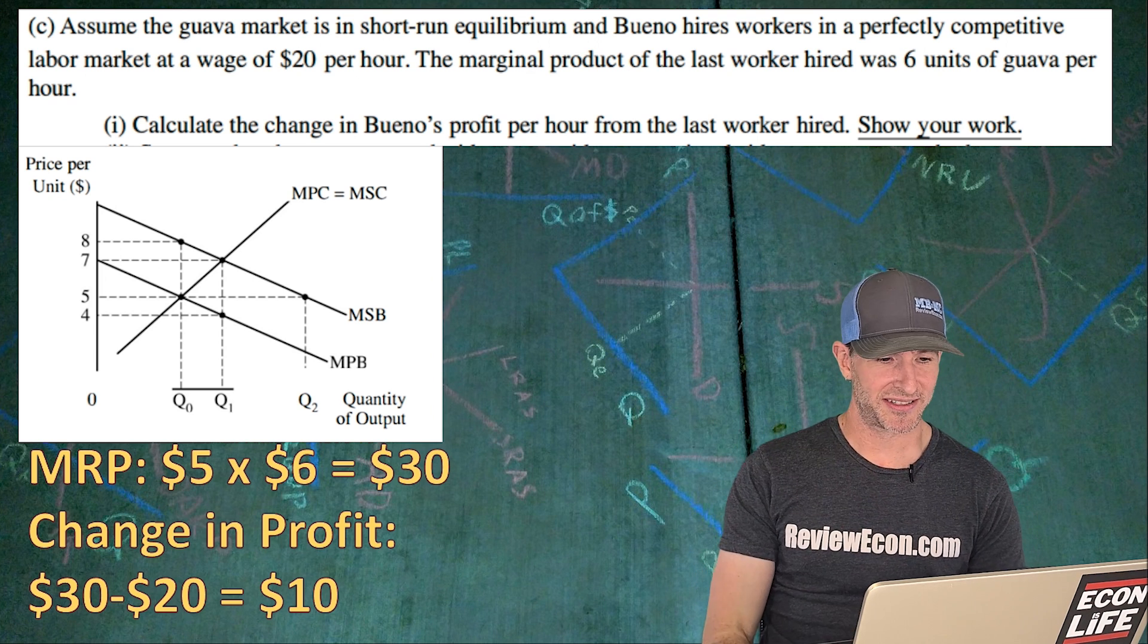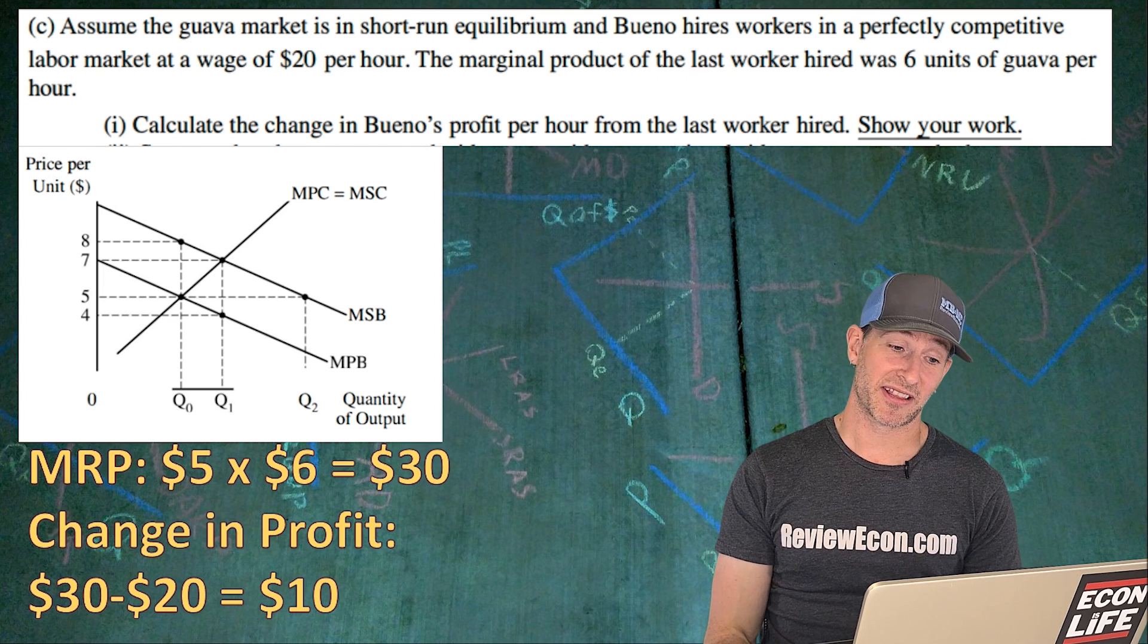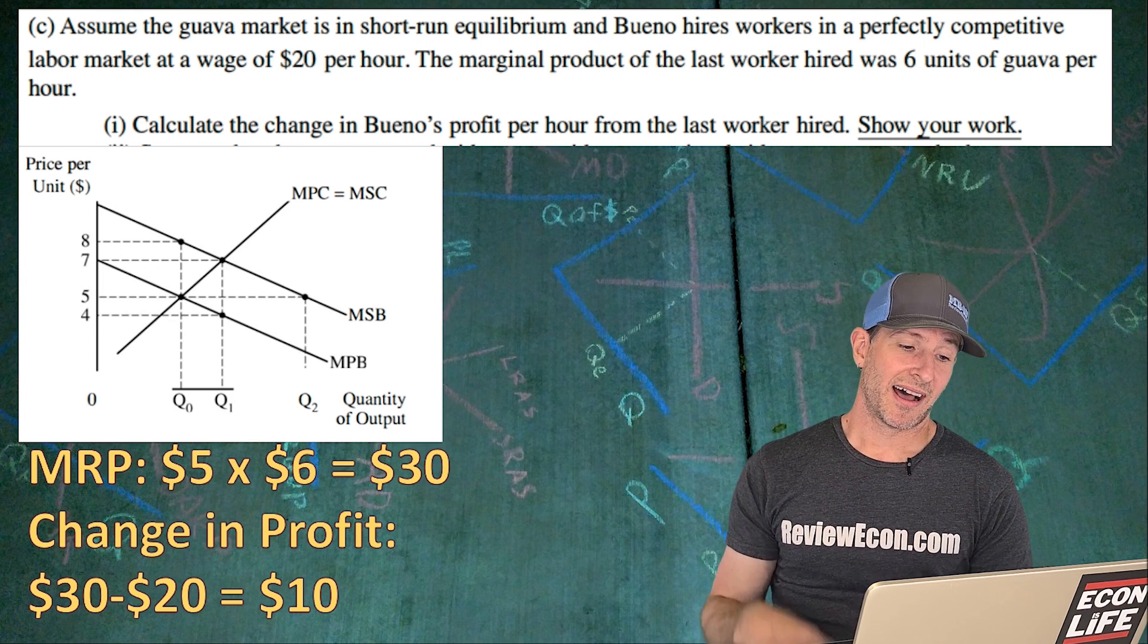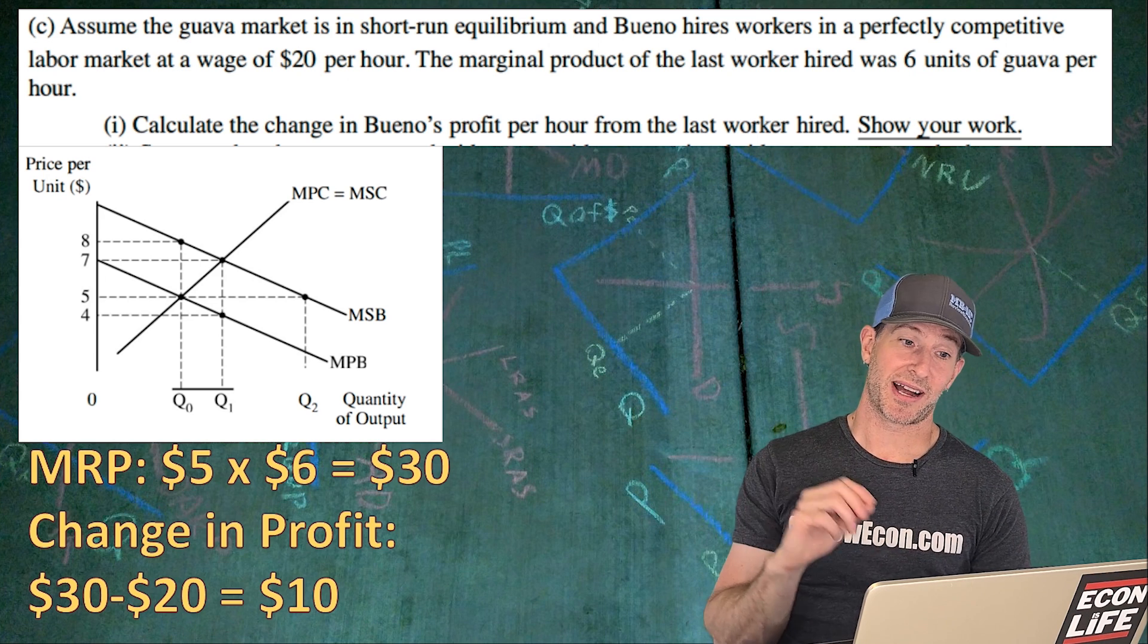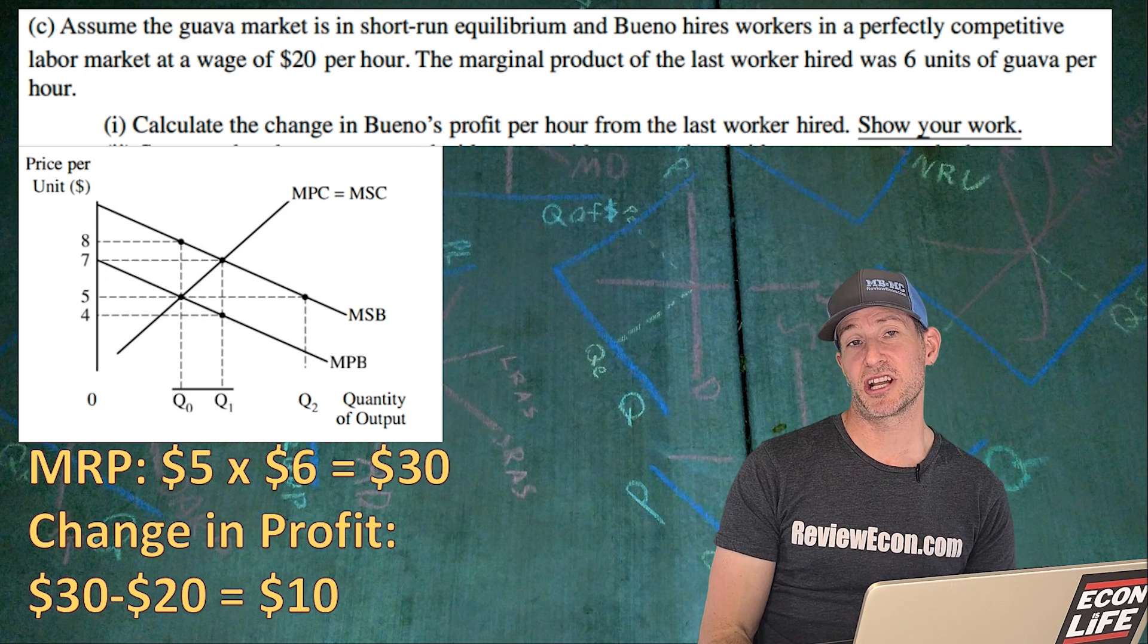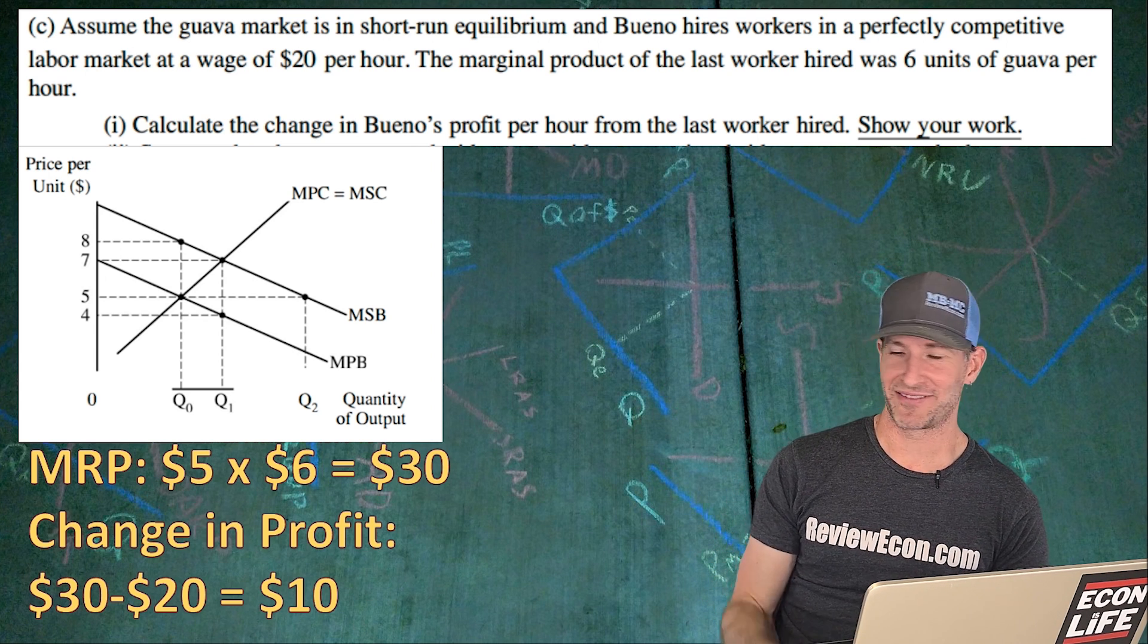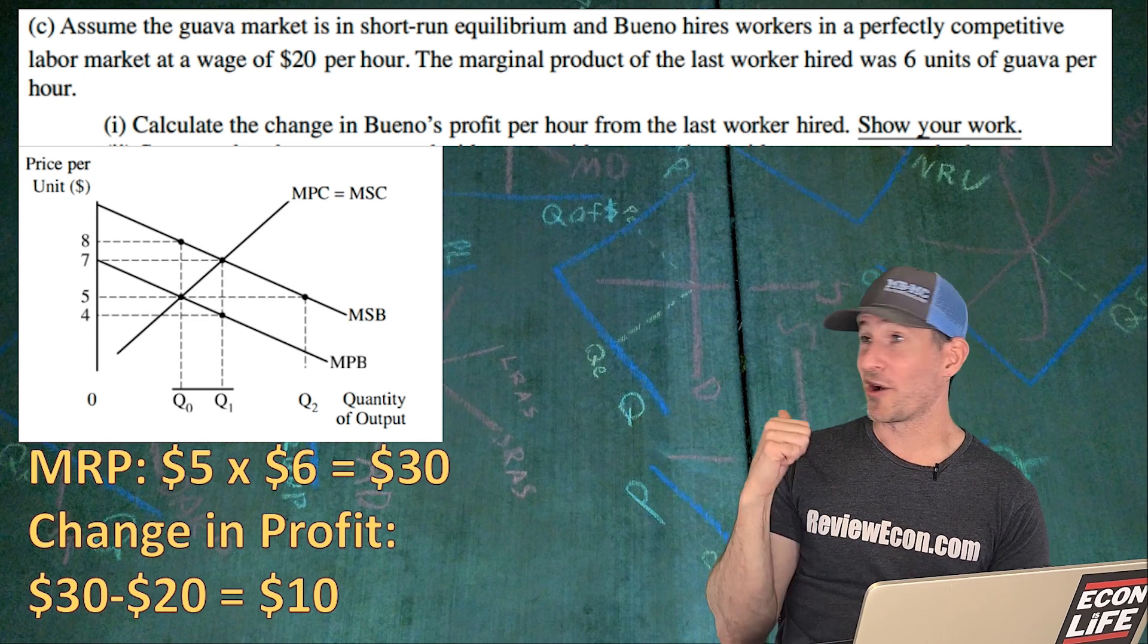And then six units of output, I put $6 but that should be six units of output, and multiply those together gives us $30 worth of marginal revenue product. And so we take the $30 worth of marginal revenue product, subtract the price of that worker or the wage which is $20, and that gives us a change in profit of $10. And I don't think I'd get marked wrong by accidentally having a dollar sign next to the six. I'm pretty sure that'd be just fine.